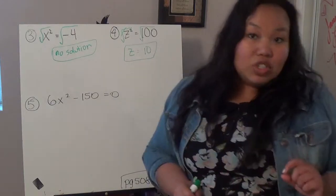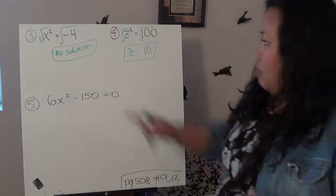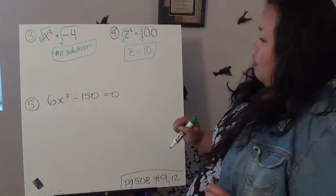Now, number 5 is just a little bit more tricky, in the sense that I don't have just this by itself. So, first, I need to get it by itself.